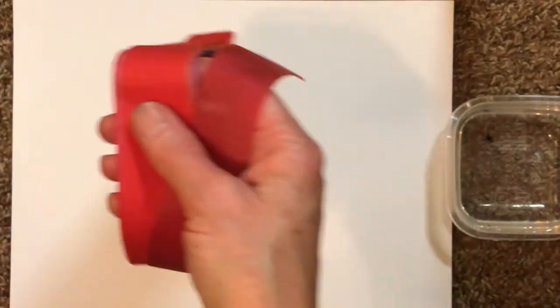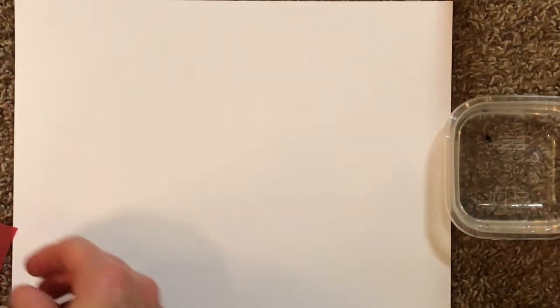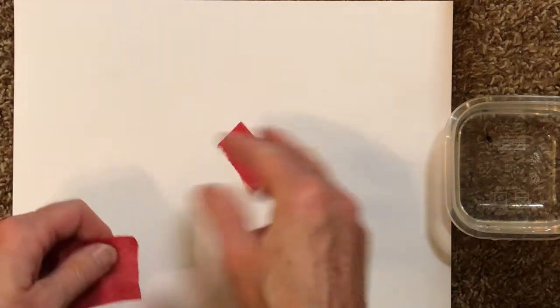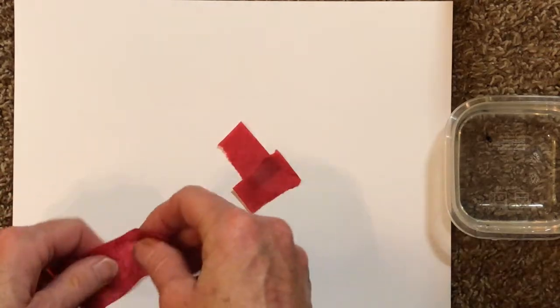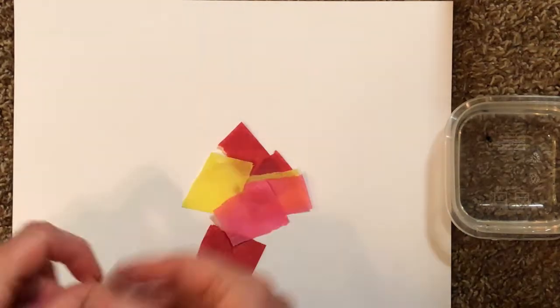First thing we'll do is select some tissue strips and start tearing them into different shapes, some bigger than others, some longer than others, with rough edges.